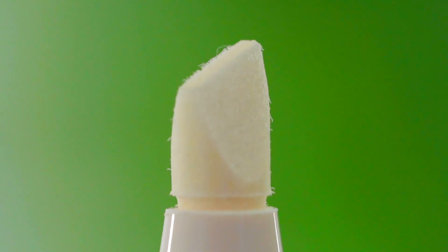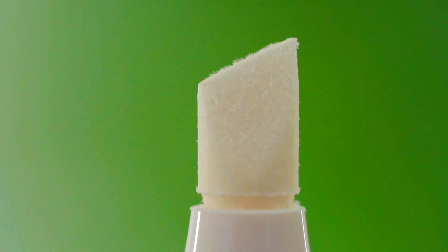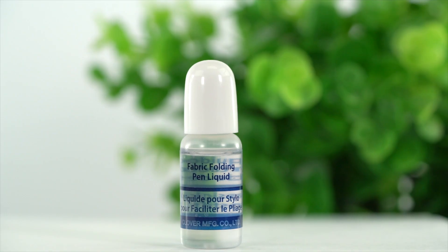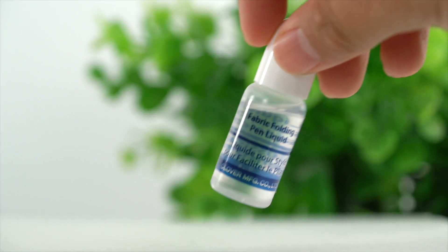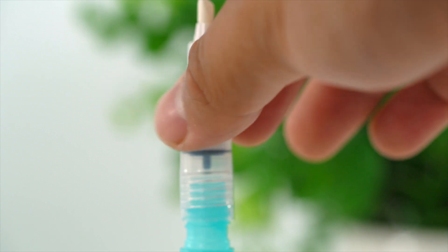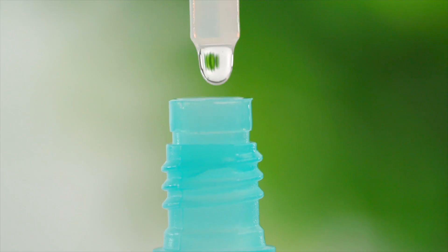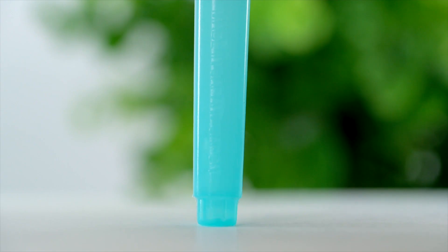The fabric folding pen resembles a felt tip pen. The reservoir is filled and is refillable with a special solution that allows the fabric to be folded along any line we draw with the felt tip.